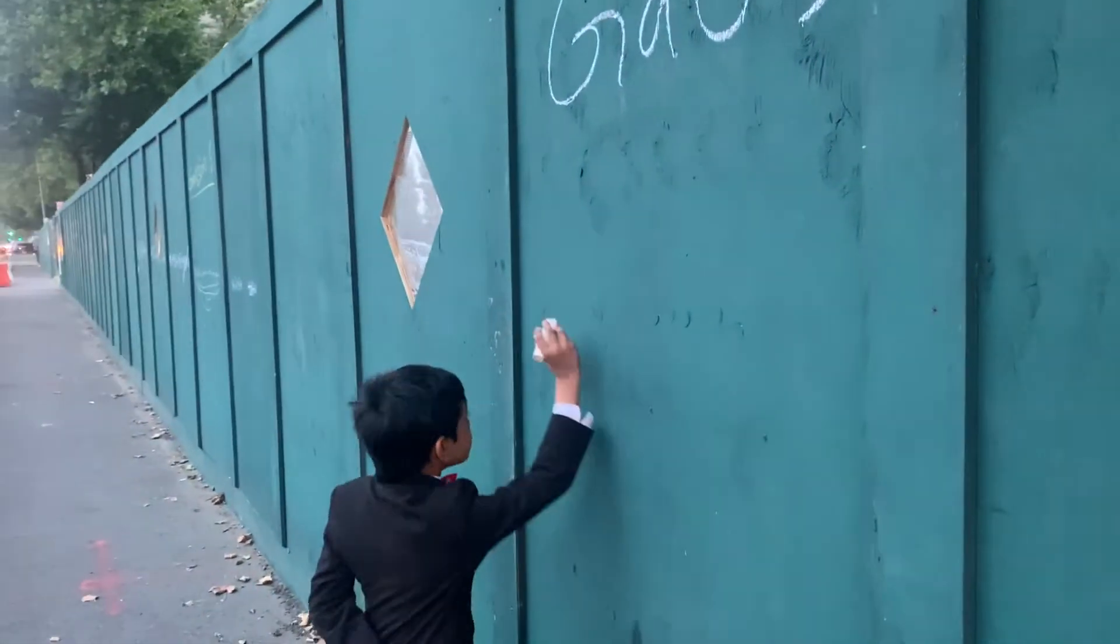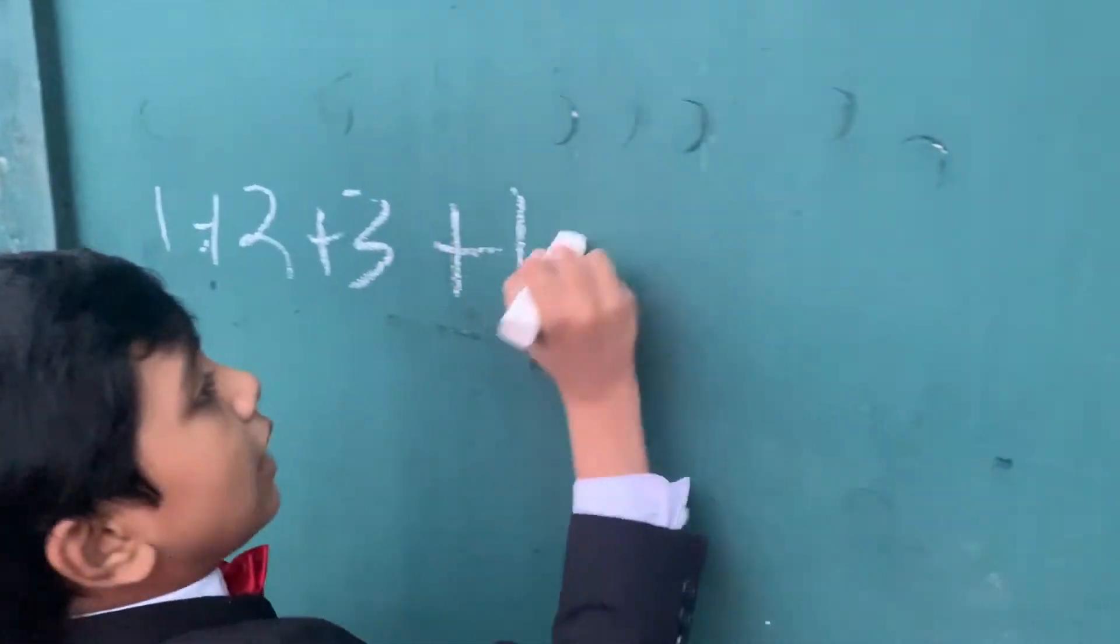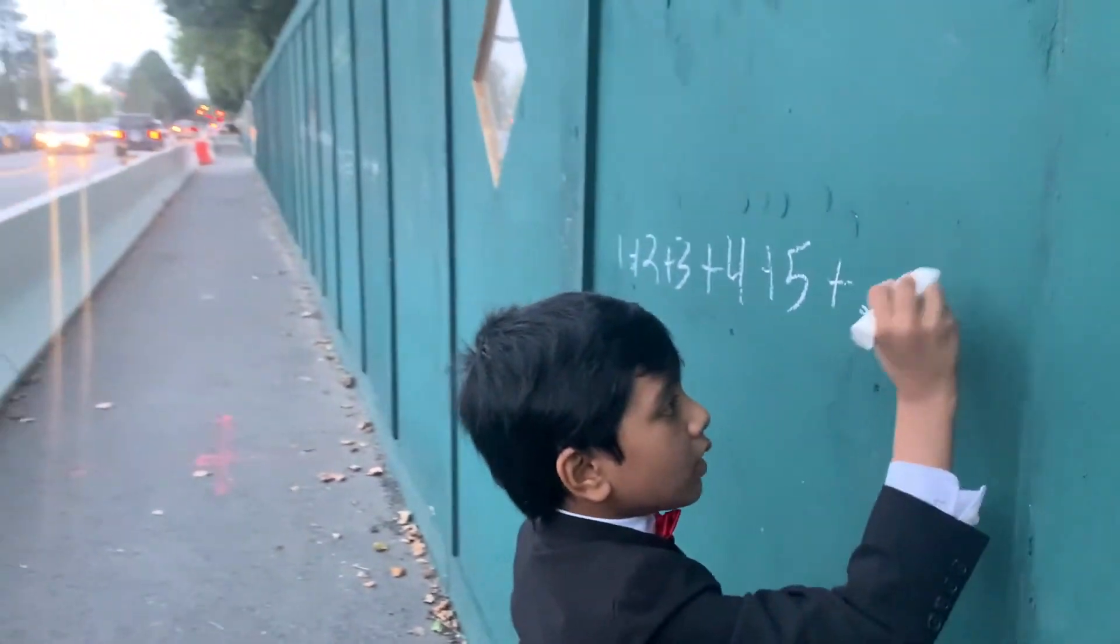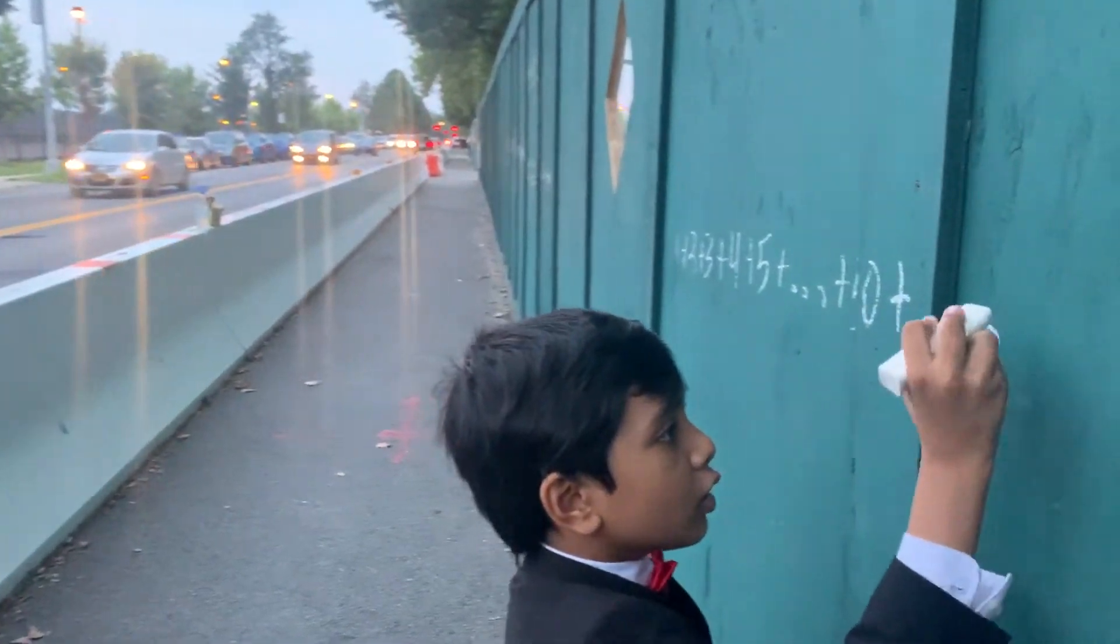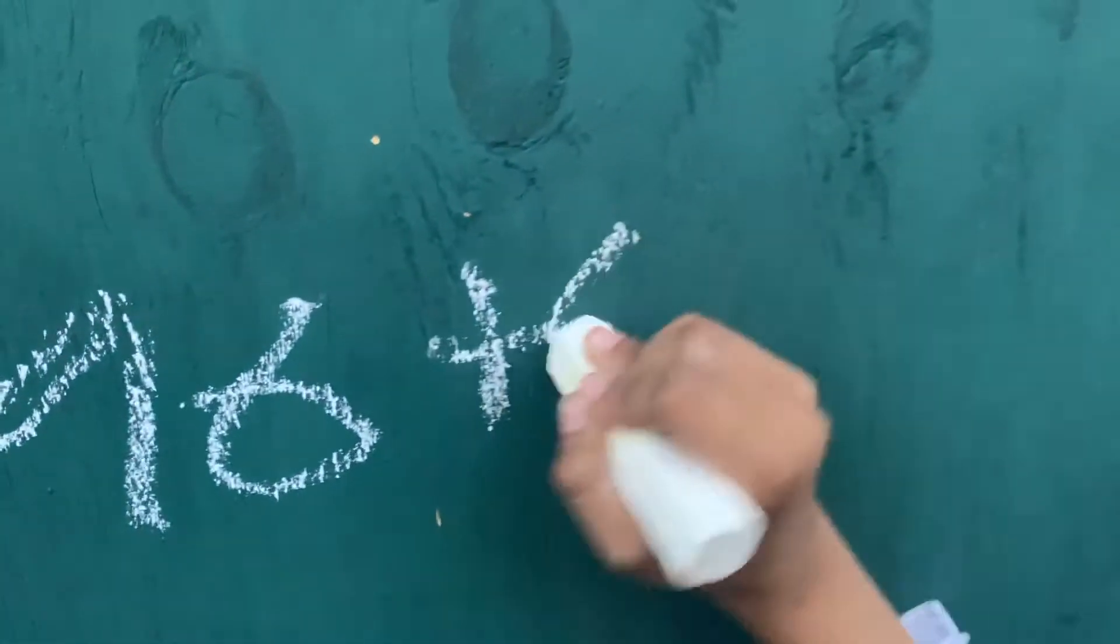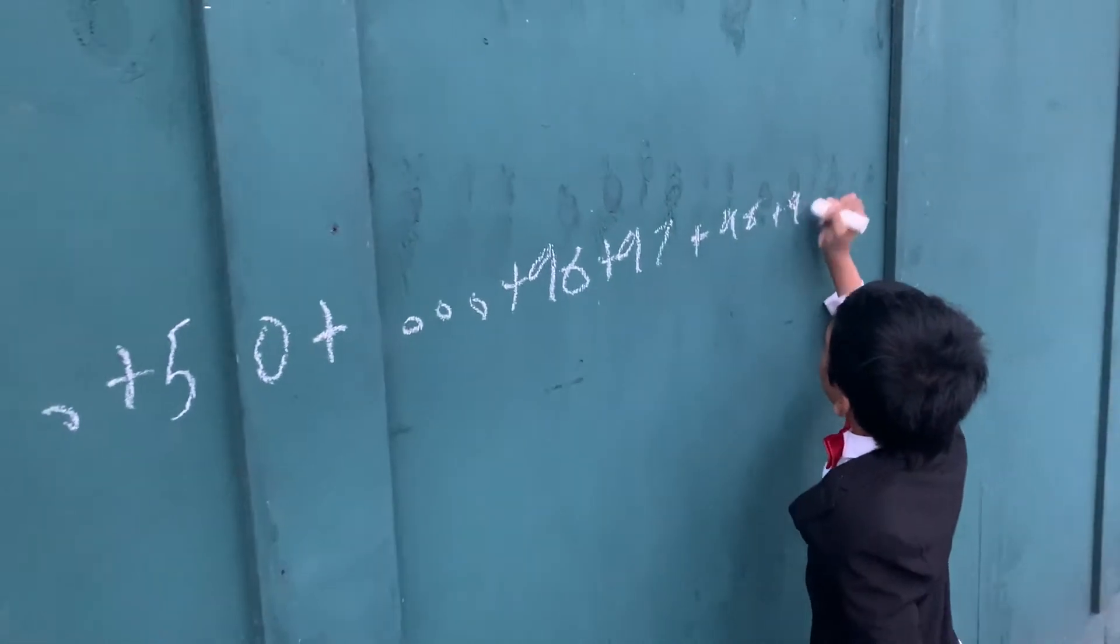So today I'll learn about it itself, starting from 1 plus 2 plus 3 plus 4 plus 5 all the way to plus 50 and then all the way to maybe 100. So 96, 97, 98, 99 and finally 100.